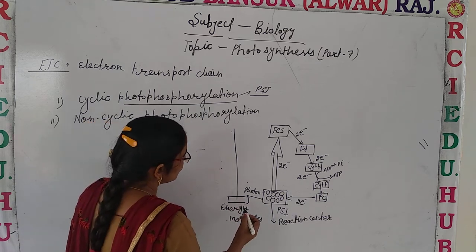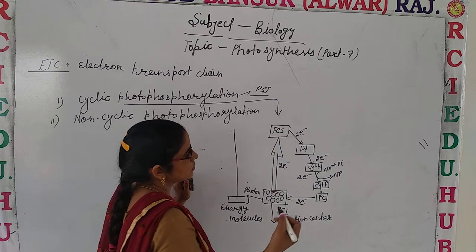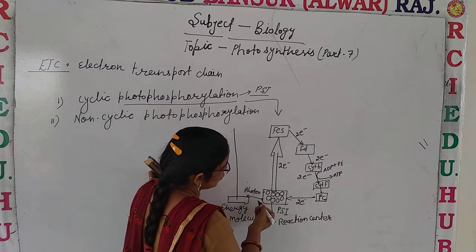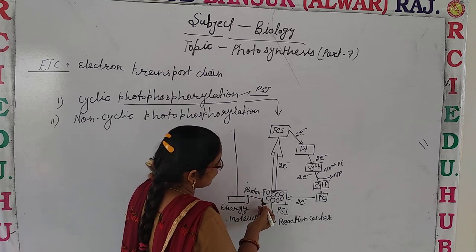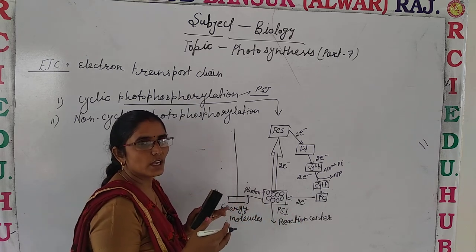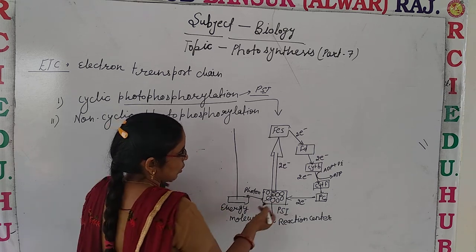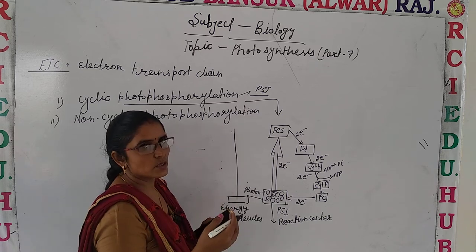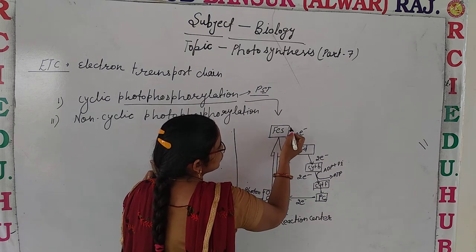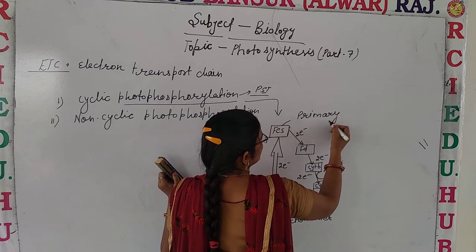Let's discuss the pathway of cyclic photophosphorylation. In cyclic photophosphorylation, first the photon — energy in the form of photon — is absorbed through the accessory pigments. As you know, in the photosystem there are accessory pigments. They first absorb the photon and pass it on to the reaction center. As energy passes into the reaction center, electrons reach an excited state and are absorbed by the primary electron acceptor.